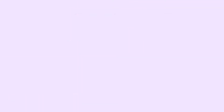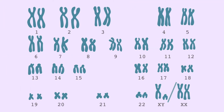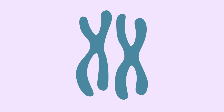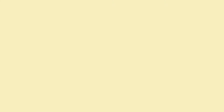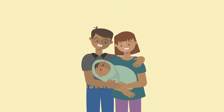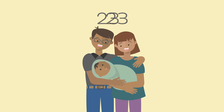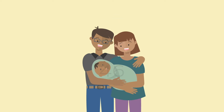Humans normally have 23 pairs of chromosomes, numbered from 1 to 22, plus one pair of sex chromosomes that determines our biological sex. Each pair is made up of one chromosome from your mother and one from your father. When a man and a woman have a baby, each contributes 23 chromosomes, so the embryo will have 23 pairs — 46 chromosomes in total.